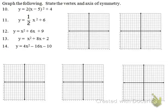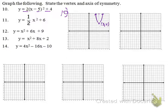For the next set of problems we're looking at graphing parabolas and finding the vertex and axis of symmetry. Number 10 is already in vertex form. We take the negative 5 and positive 4 out of vertex form — the vertex is at the point 5, 4. The coefficient out in front is positive 2, so it faces up and will be a little steeper. Our vertex is 5, 4 and the axis of symmetry is x equals 5.